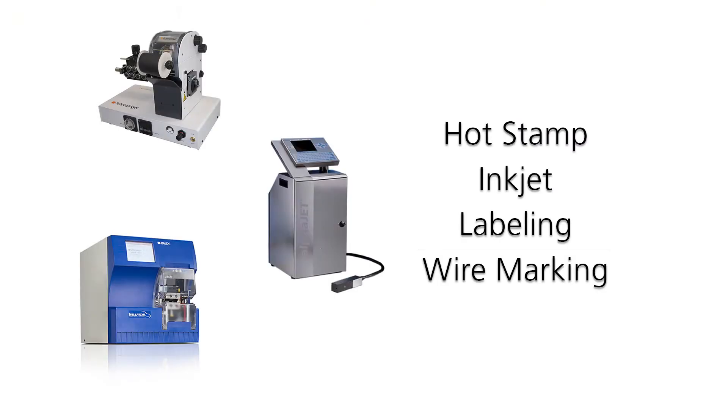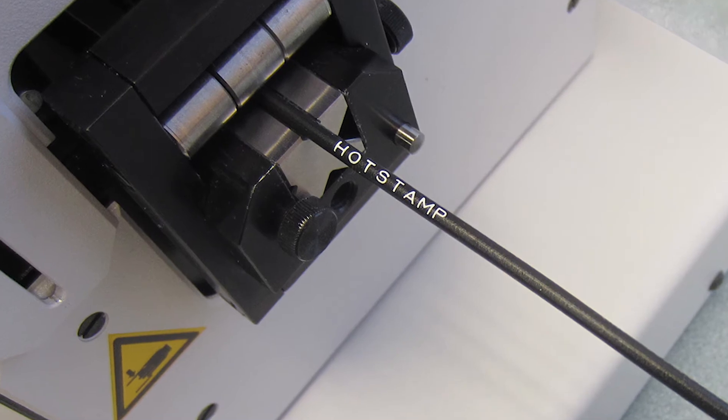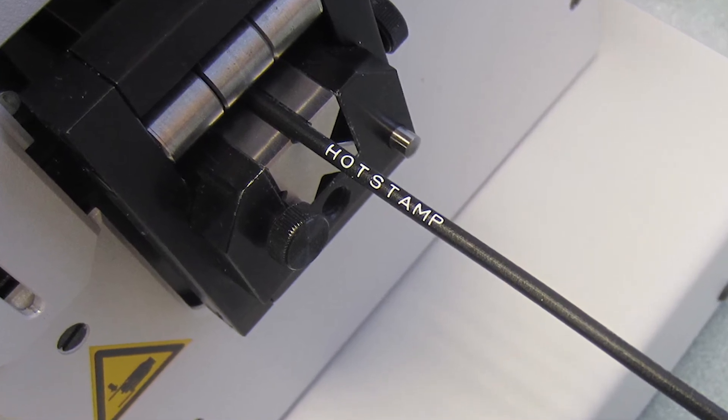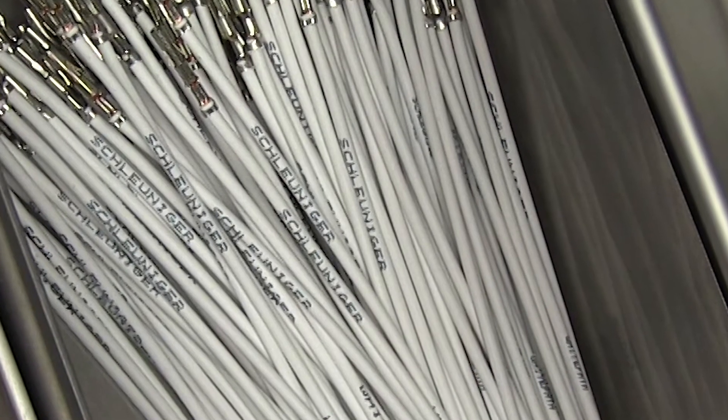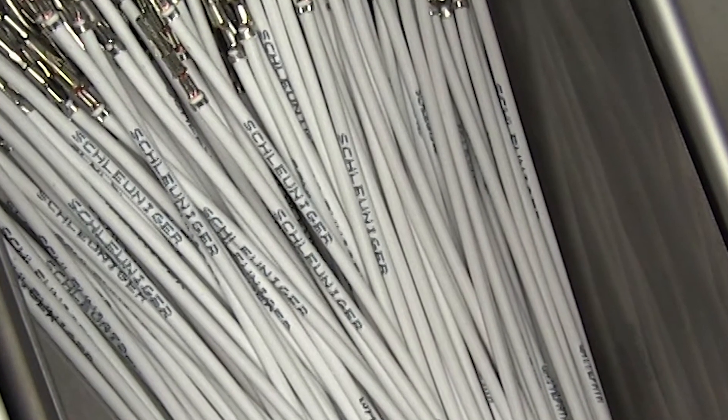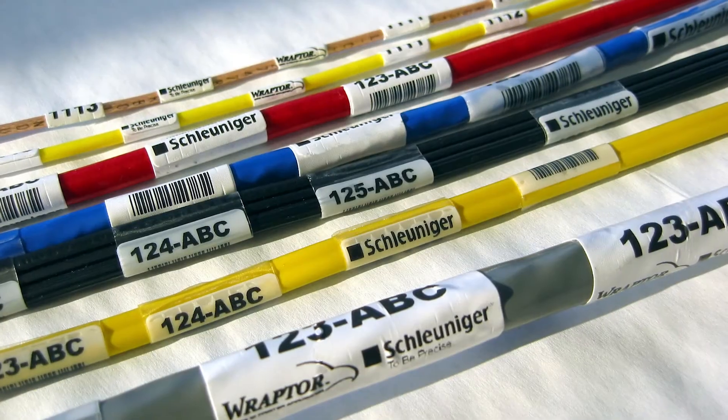Schleuniger offers marking capabilities on all crimp center fully automatic wire processing machines. With options such as hot stamp, inkjet printing, and label wrapping, wires and cables can easily and quickly be marked with text, barcodes, logos, and much more.